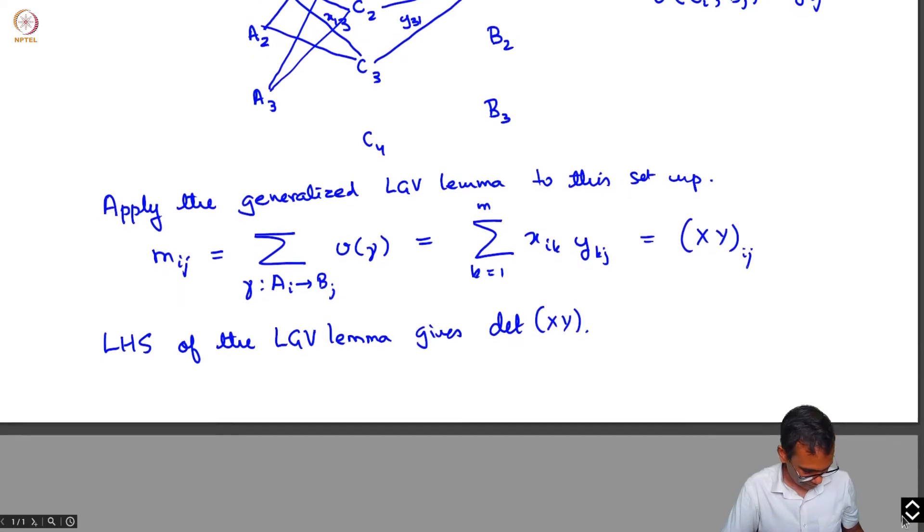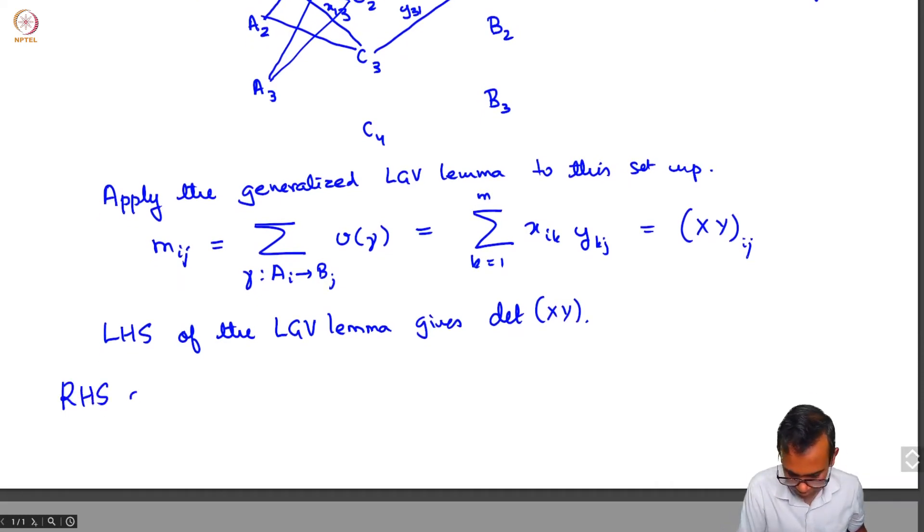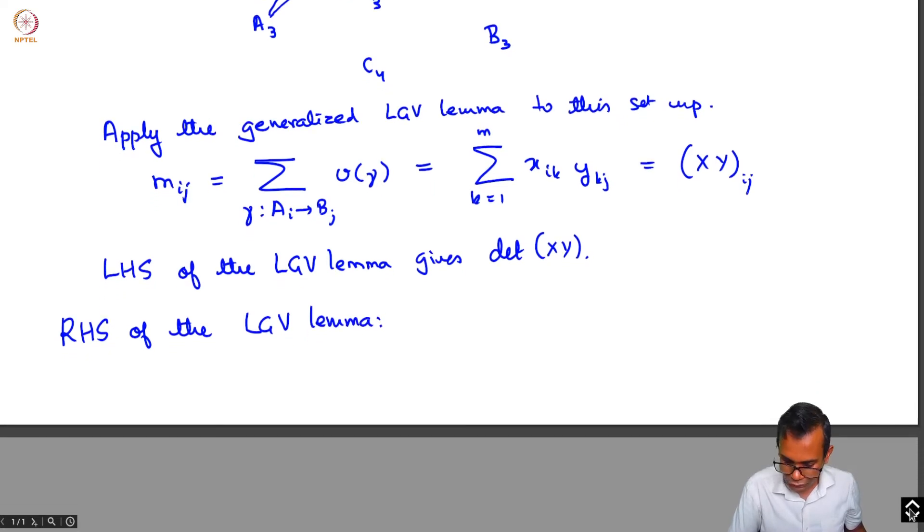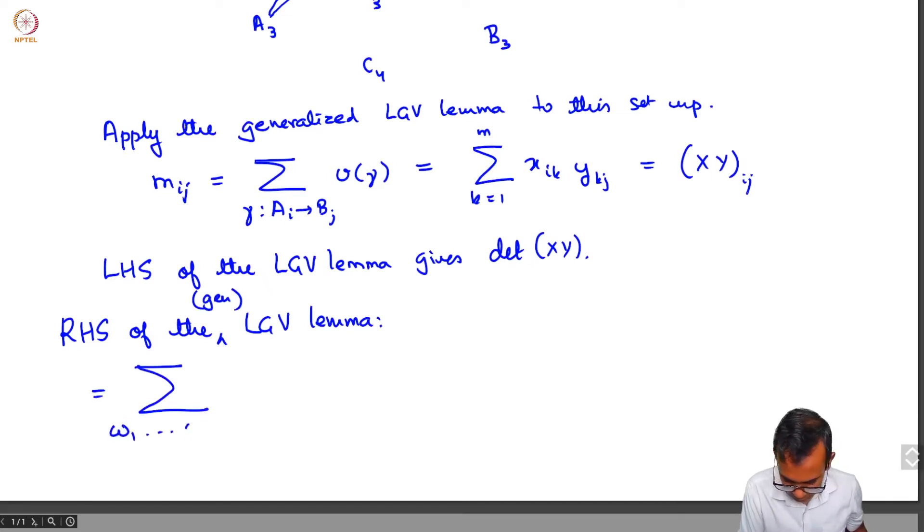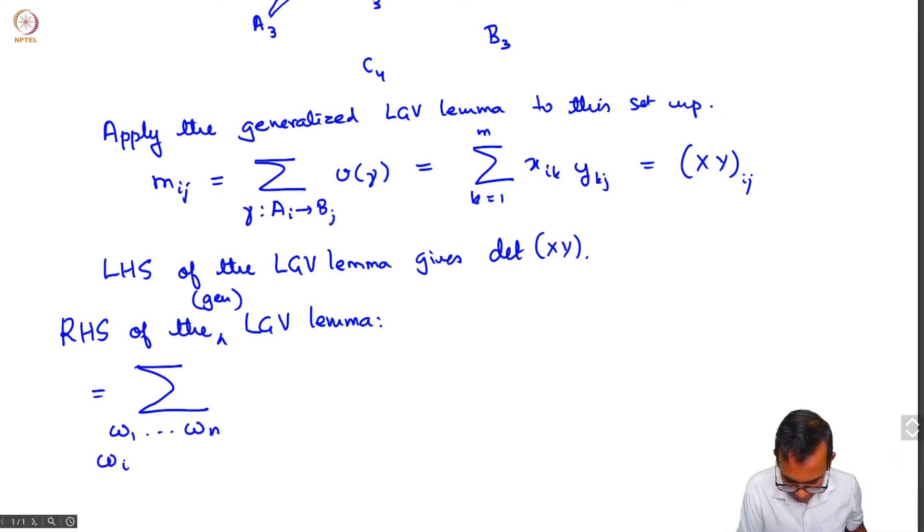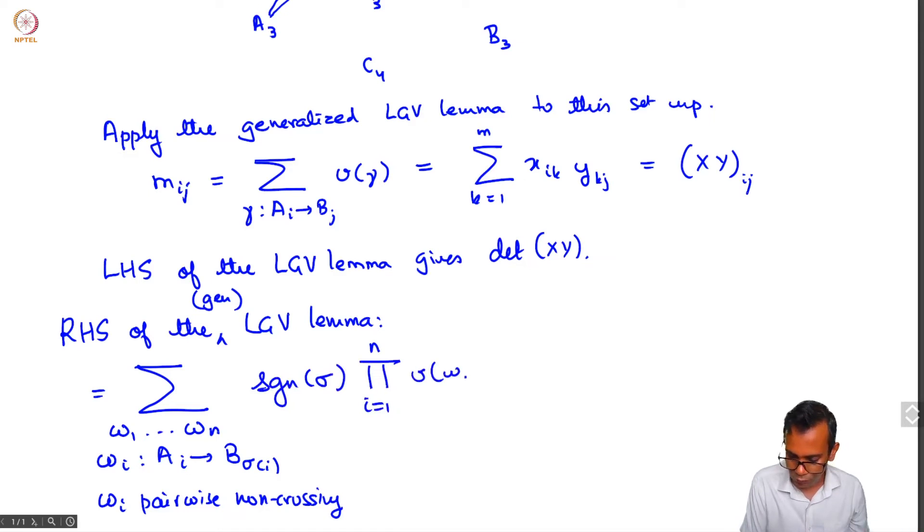What about the right-hand side? The generalized LGV lemma gives a sum over all paths omega 1 up to omega n. Omega i now need not be from ai to bi, but from ai to b sigma i for some permutation sigma, but these are assumed to be pairwise non-crossing.